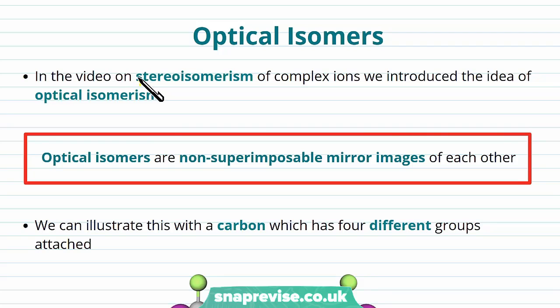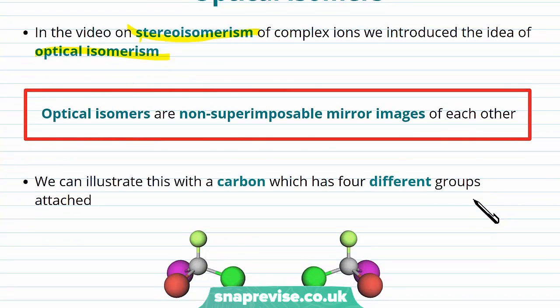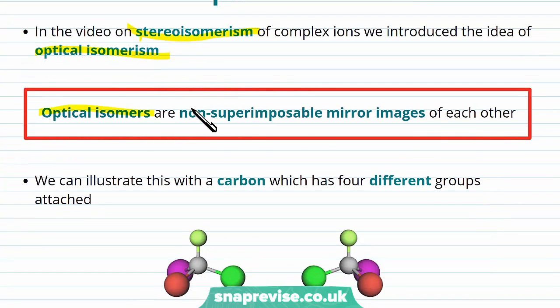If you've watched our video on stereoisomerism of complex ions in the transition metal section of the course, we introduced the idea of optical isomerism. Let's define it again here by saying that optical isomers are non-superimposable mirror images of each other. Let's take a closer look at what we mean by that.